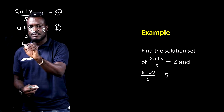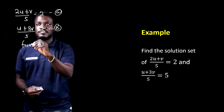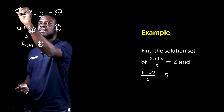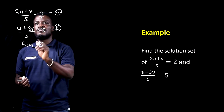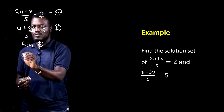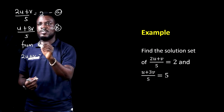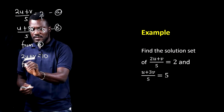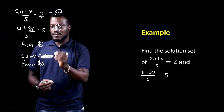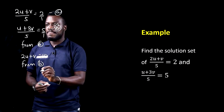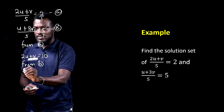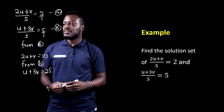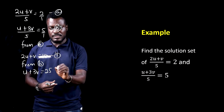From equation A, we can cross multiply — since the right side is over 1, multiplying gives us 2u + v = 10. Then from equation B, cross multiplying similarly gives us u + 3v = 25. This is our equation 1 and equation 2.